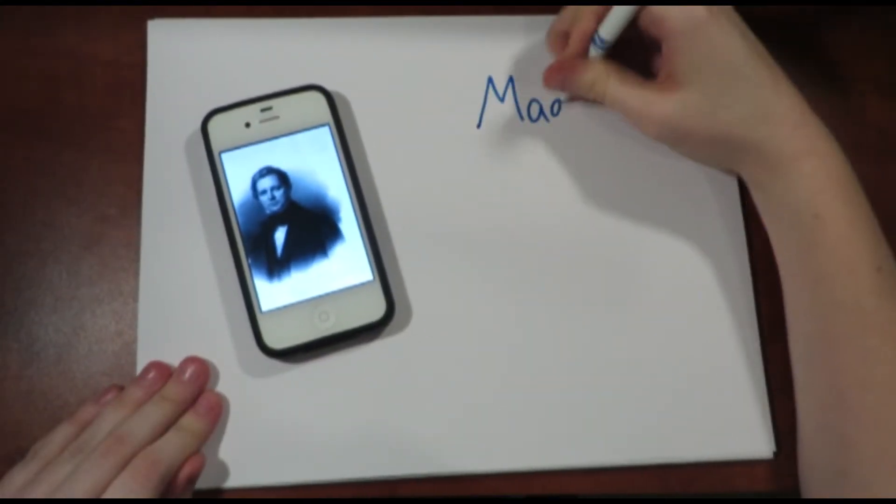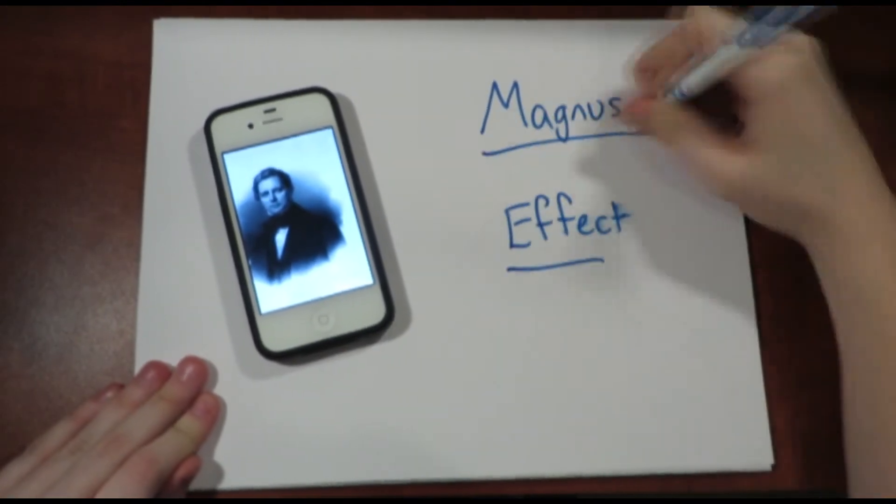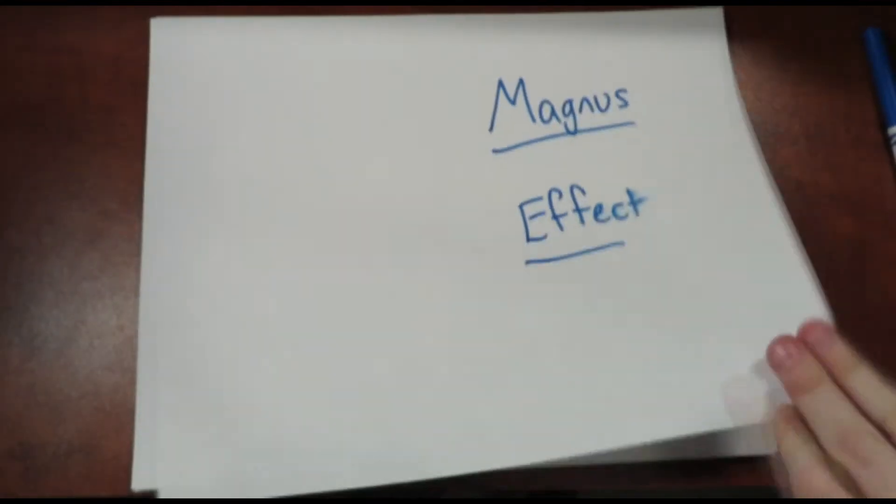This imbalance of force is called the Magnus effect, named for physicist Gustave Magnus, who discovered this in 1852, that a spinning object traveling through a liquid is forced to move sideways.